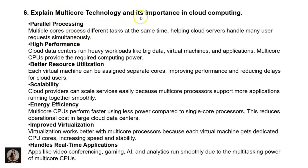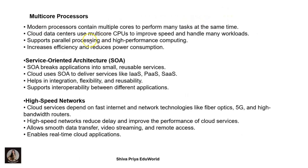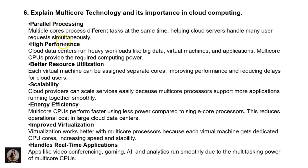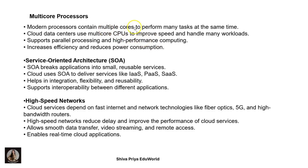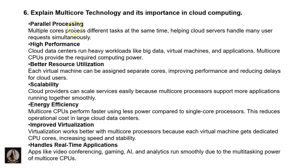The next question is: explain multi-core technology and its importance in cloud computing. Parallel processing: multiple cores process different tasks at the same time, helping cloud servers handle many user requests simultaneously. High performance: cloud data centers run heavy workloads like big data and virtual machine applications — multi-core CPUs provide the required computing power. Better resource utilization: each virtual machine can be assigned separate cores to work simultaneously, improving performance and reducing delay.